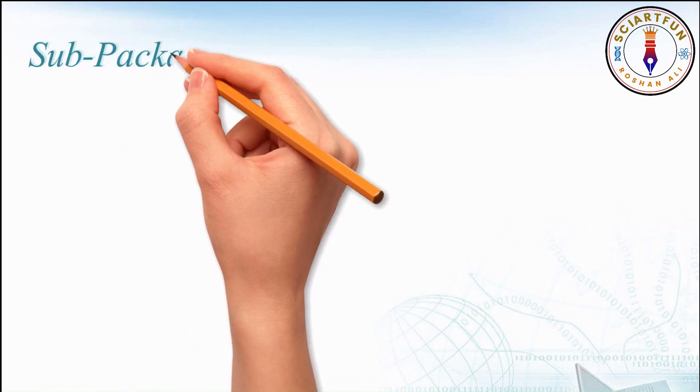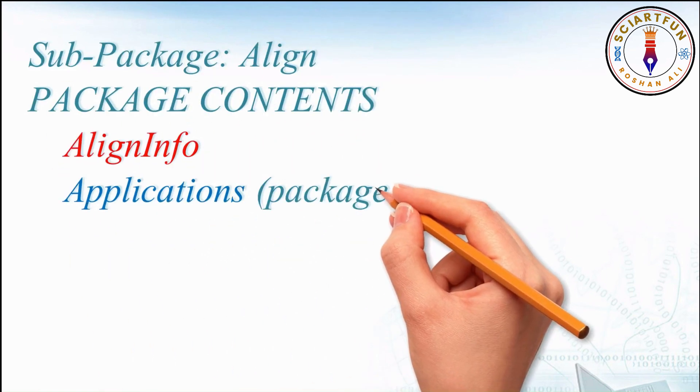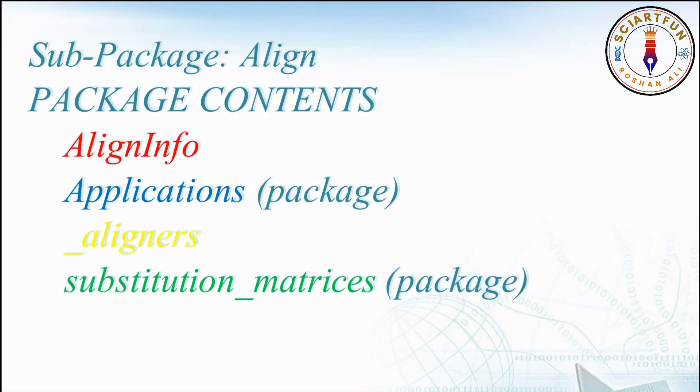Let's take an example sub-package called Align. Align is a sub-package inside Biopackage. This Align folder contains a module called AlignInfo. It contains two sub-sub-packages, applications and substitution matrices. These may be called packages or sub-packages, depends on your choice. There is another file, underscore aligners.